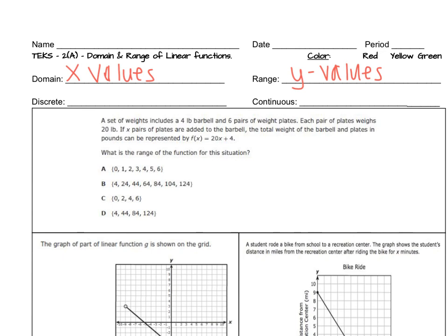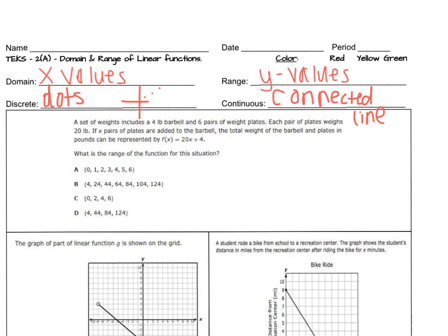For discrete, this is whenever your graph only contains dots, which is just specific information, so your graph may look like this. For continuous, it will have a connected line which may go on forever or it may not. You can have a graph that goes on forever in either direction or you can have a graph that has endpoints. Continuous just means that those dots are connected.